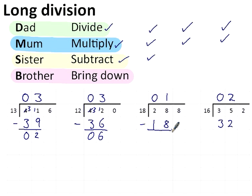Take away 18 from 28. 8 take away 8 is 0, 2 take away 1 is 1. Over here, 5 take away 2 is 3. 3 take away 3 is 0.